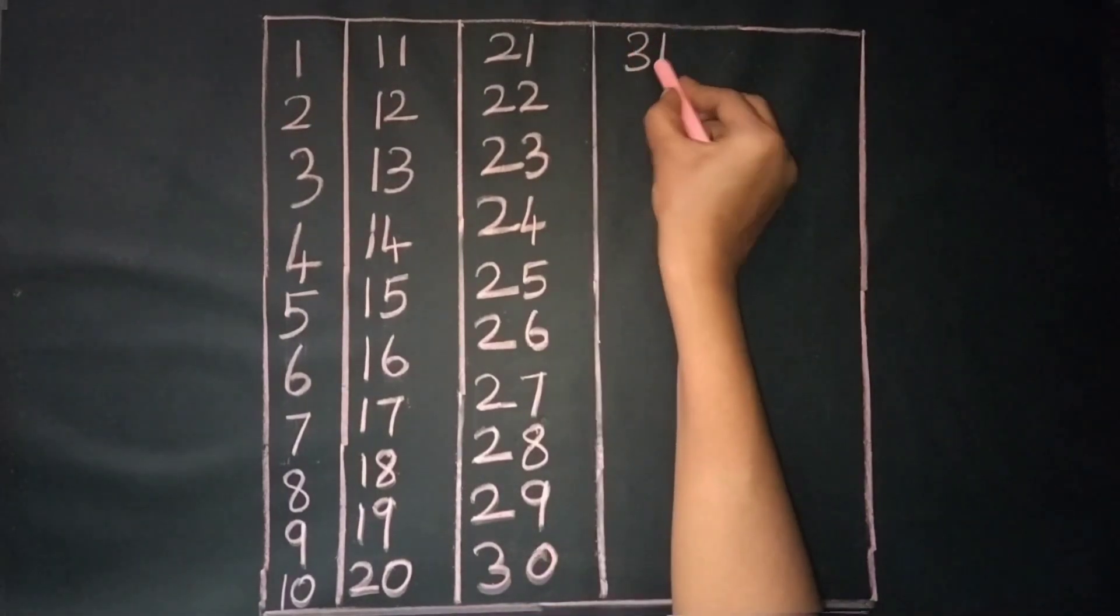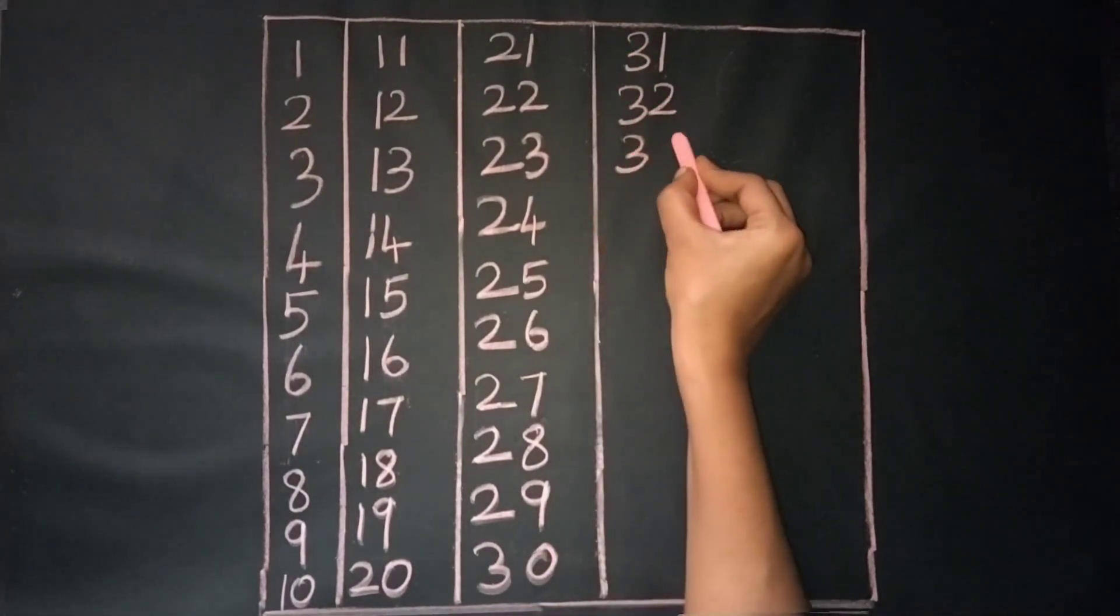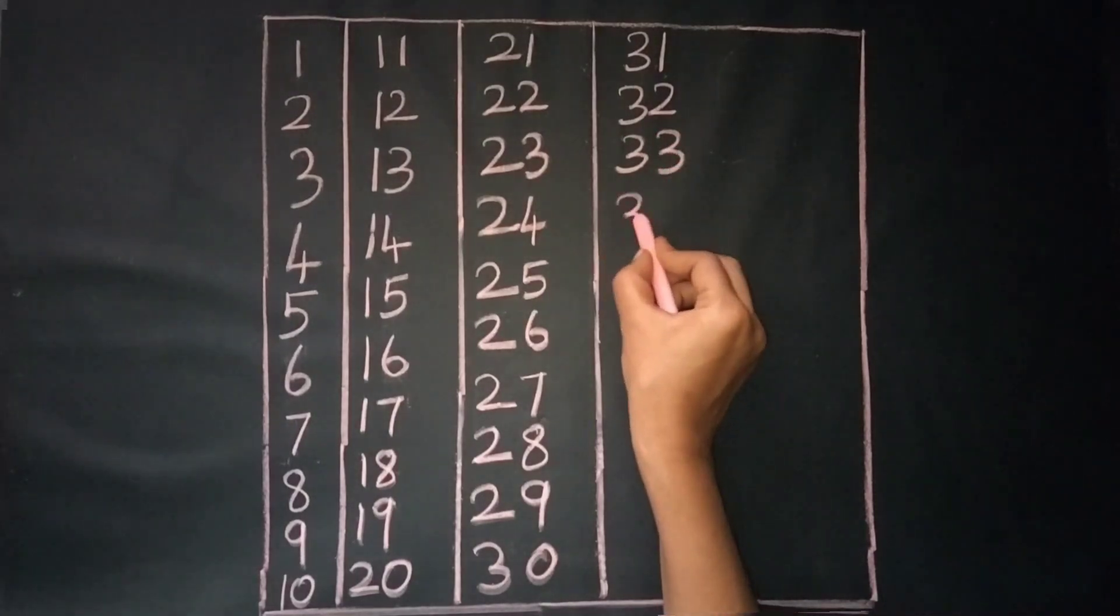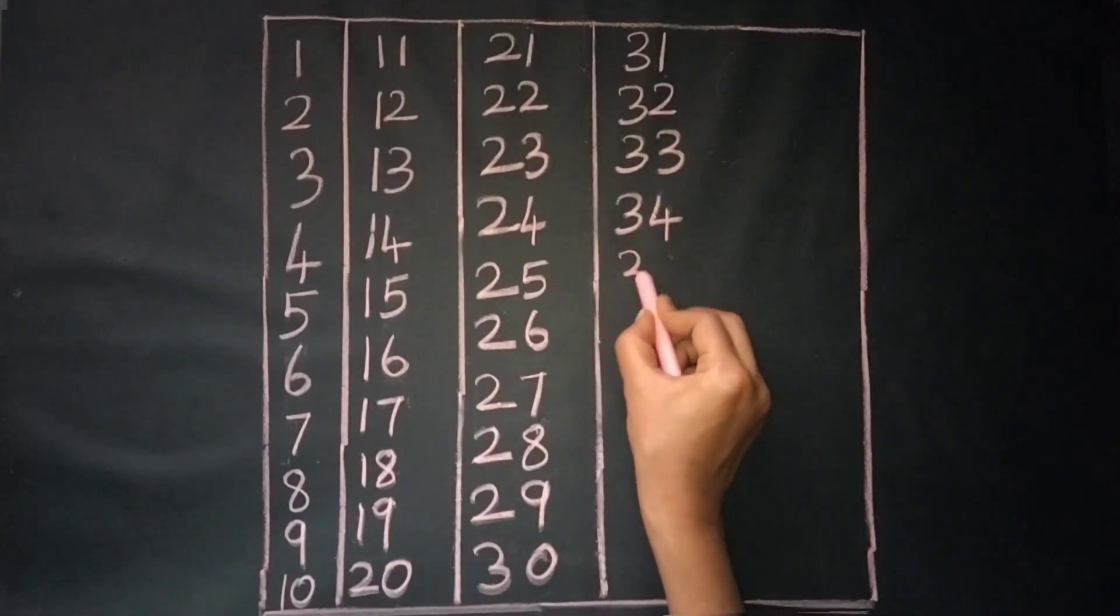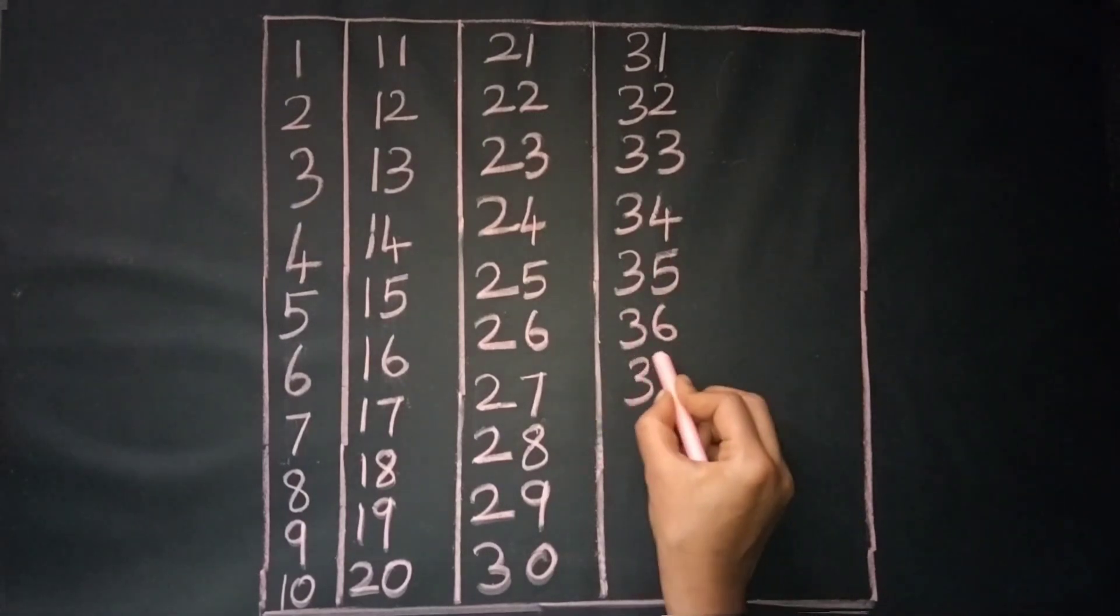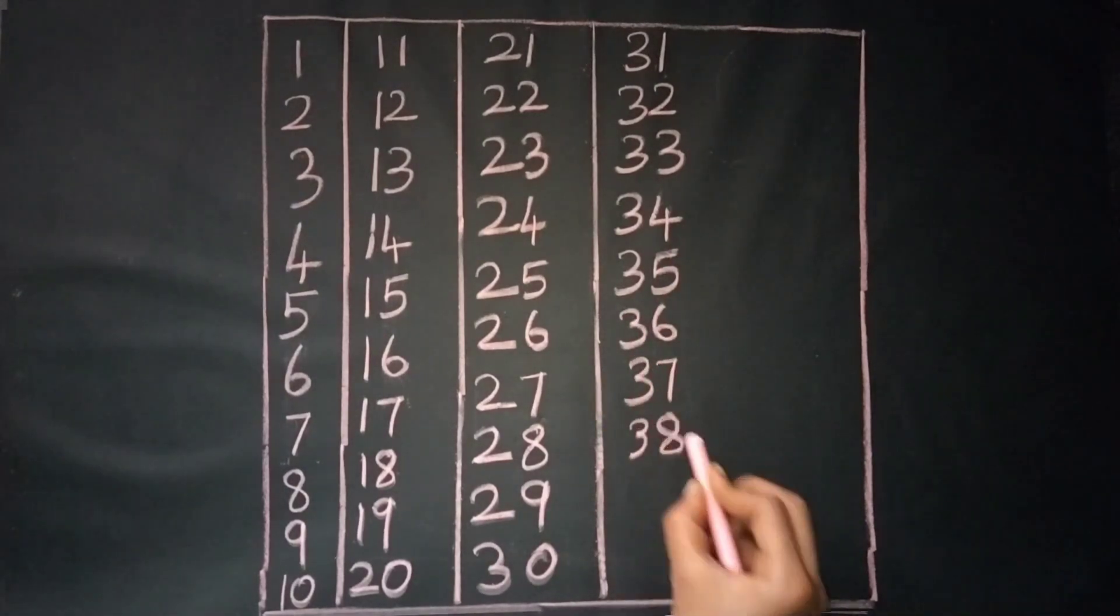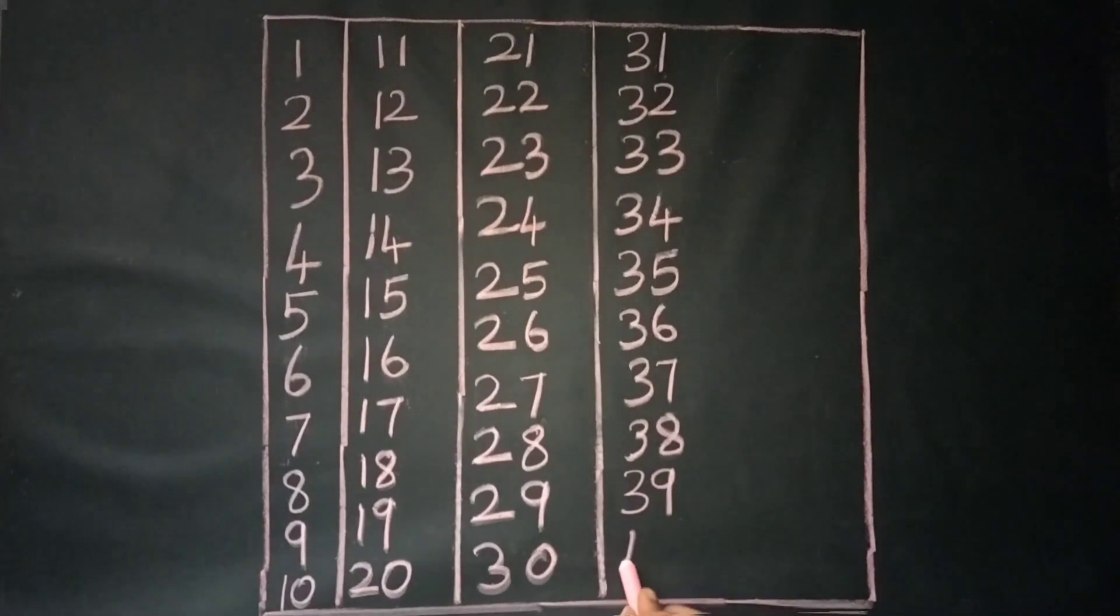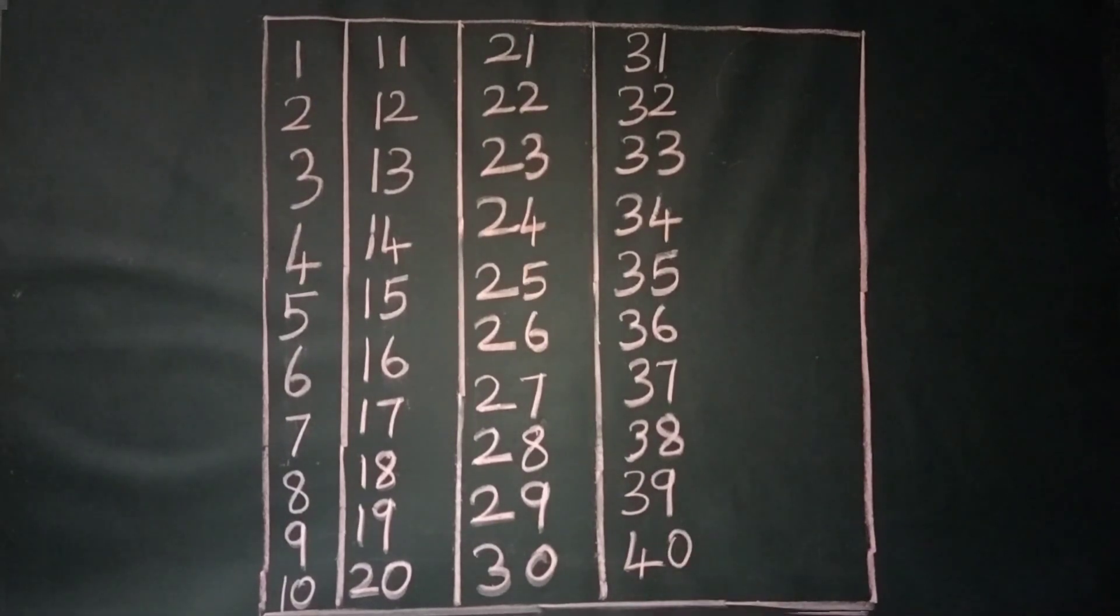31, 32, 33, 34, 3, 5, 35. 3, 6, 36. 3, 7, 37. 3, 8, 38. 3, 9, 39. 4, 0, 40.